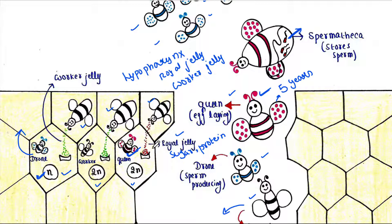The worker jelly, which is mainly composed of honey, pollen, and water, is not very nutrition-rich unlike the royal jelly. It is fed to the larvae supposed to become workers or drones.